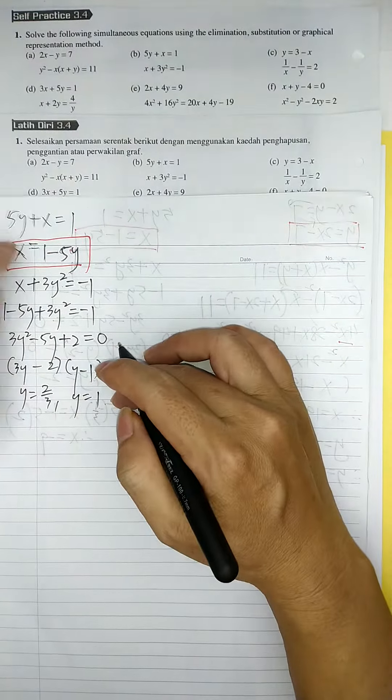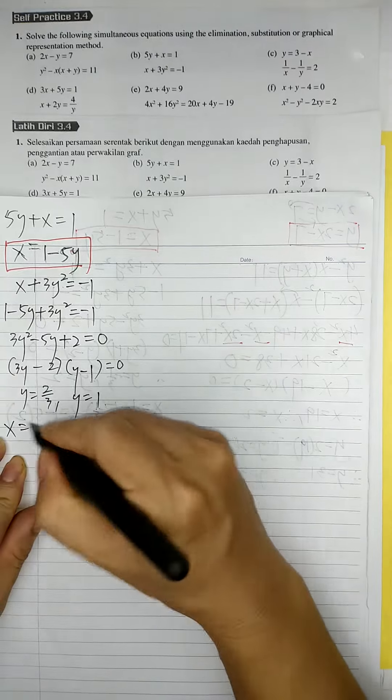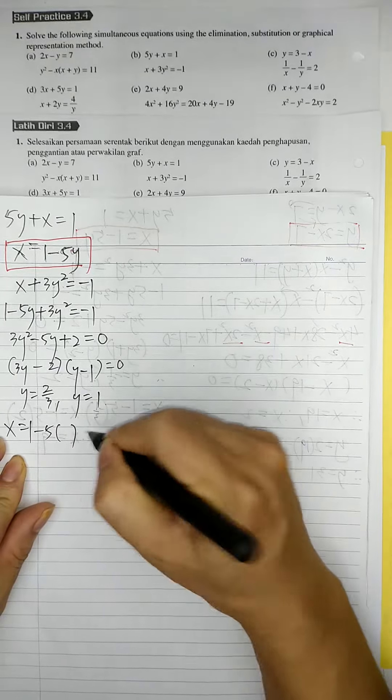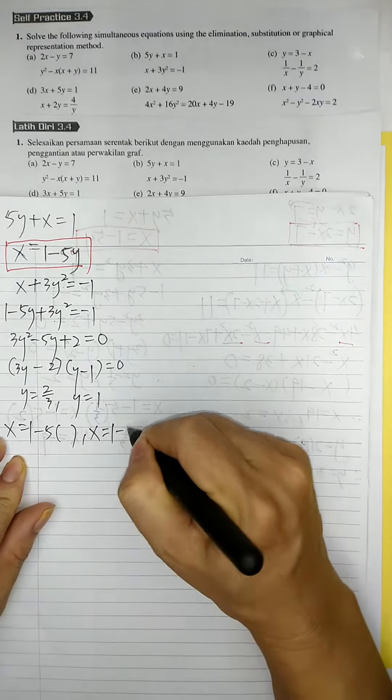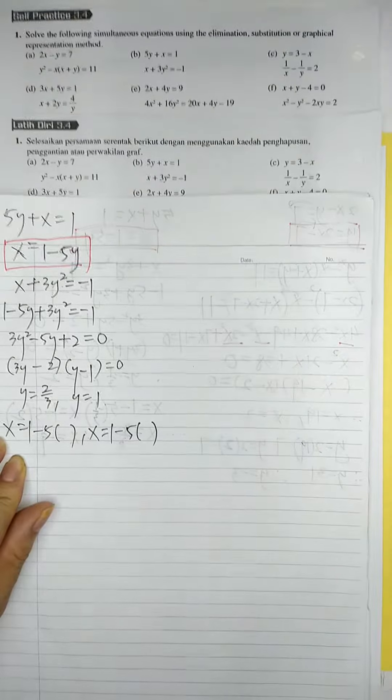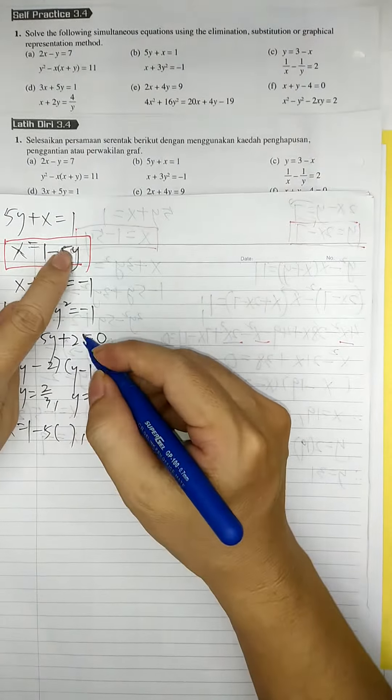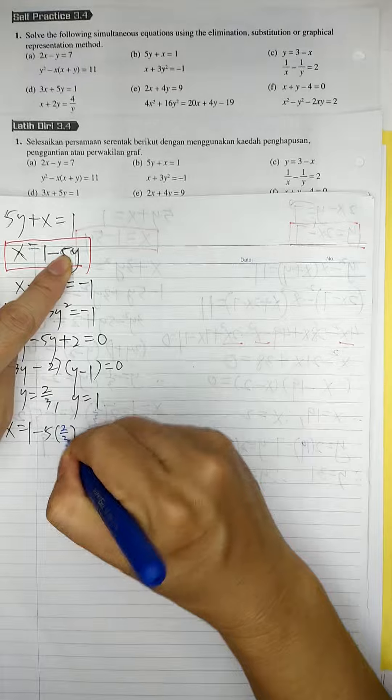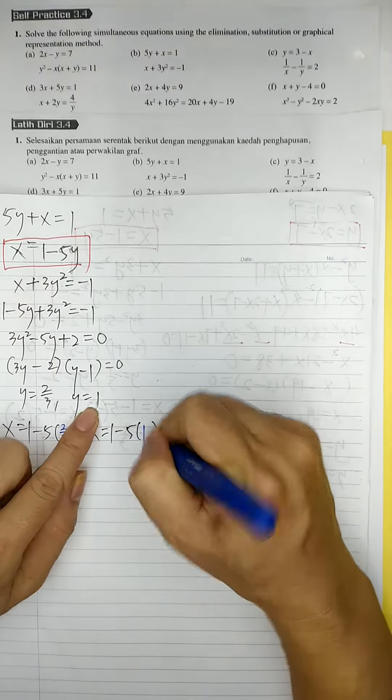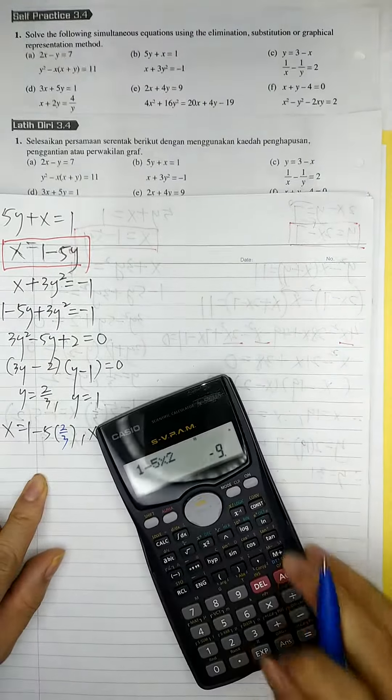After we get y, check x. So x equal to 1 minus 5y. Y replaced by 2 over 3, and y replaced by 1. Check from the calculator.